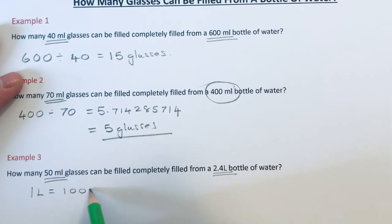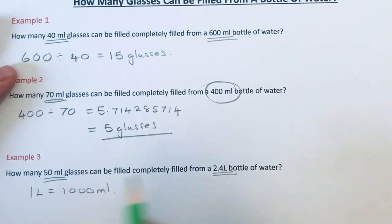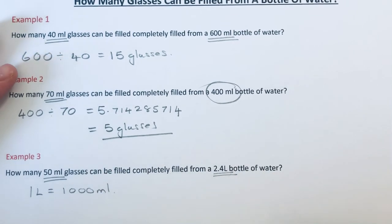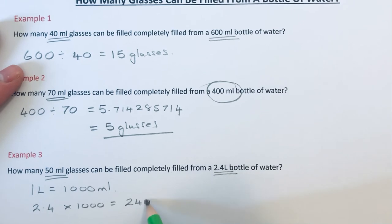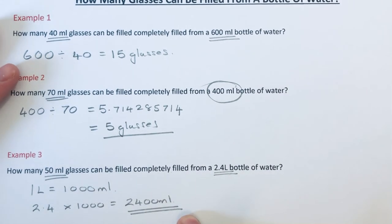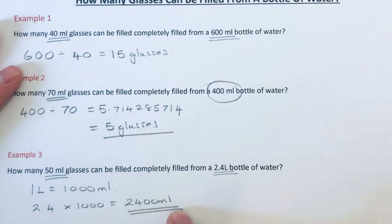If we do 2.4 times a thousand, we get 2,400 milliliters. So that is the volume of the bottle of water. We now need to divide that by the volume of the glass.